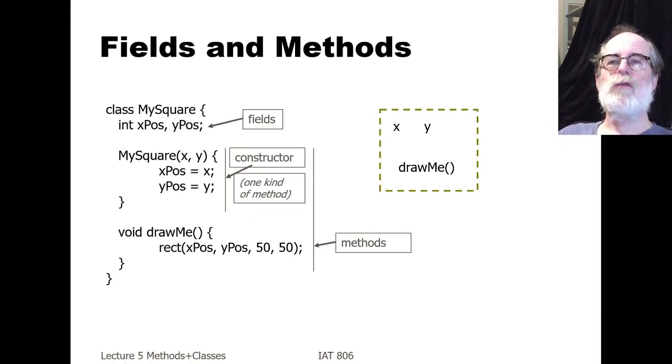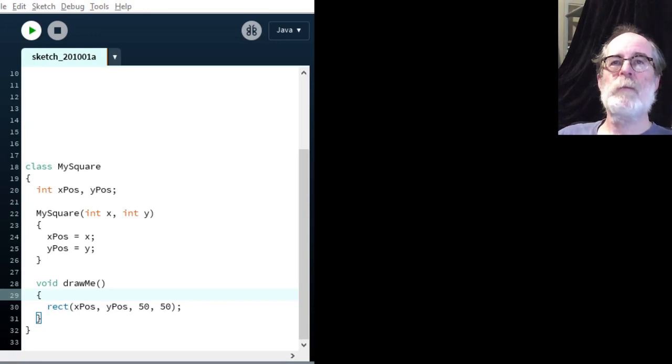Let's now go to the chunk of processing, and we can see that has happened here. Here's class MySquare, once again, int xPos, yPos, and there's the constructor where I've said what the constructor parameter types are instead of just x and y as in the slides. Same assignment of the fields to the initial values given by the constructor, and this thing, DrawMe.